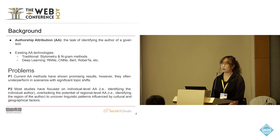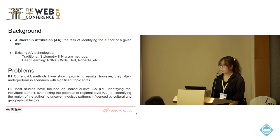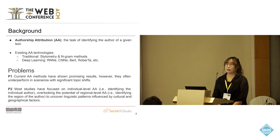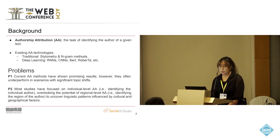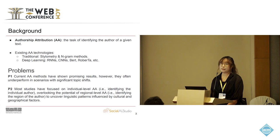When we did our exploration in this field, we found there are still two main problems. The first is that current authorship attribution methods cannot perform very well in scenarios with topic shifts. The second problem is that all authorship attribution tasks are based on the individual level — given a text, identifying the individual author who wrote it. But sometimes we are also curious about where the text is written. For example, given a tweet, we are curious whether it is from Singapore, Thailand, or Malaysia.